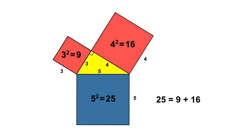The right angle is opposite the longest side, which is 5 units, and this is the hypotenuse. Over the years since Pythagoras, mathematicians have provided proofs for this theorem. In this video, I am going to look at a couple of these proofs — the first is a more visual representation, whilst the second draws on a more algebraic approach.